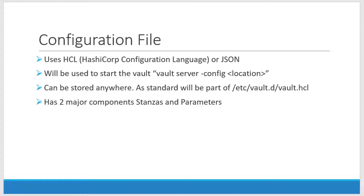We will have a quick overview on how HCL can be written and how the data can be represented. Once the configuration file is made, I can provide that as an input while starting the server using the command 'vault server -config' followed by the location of the file.